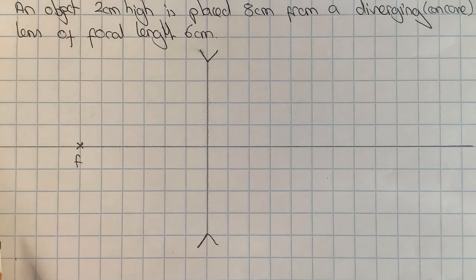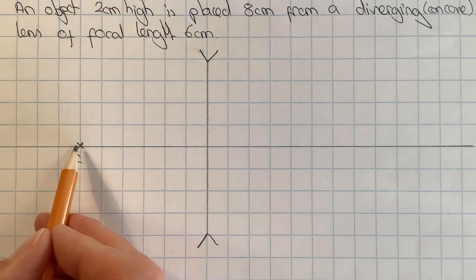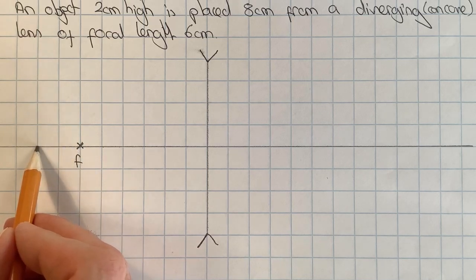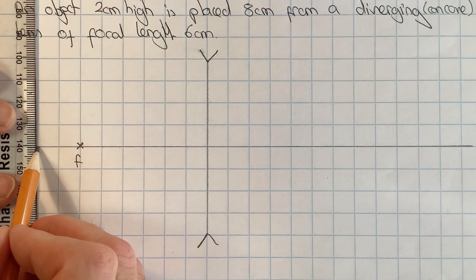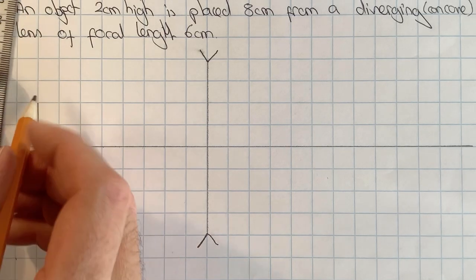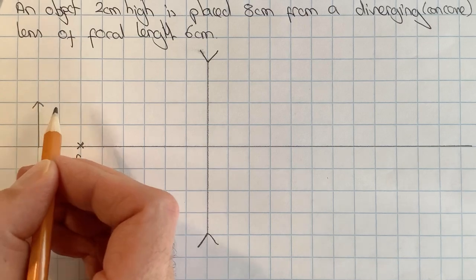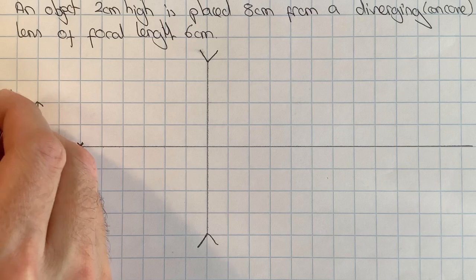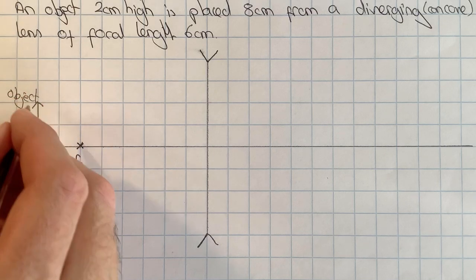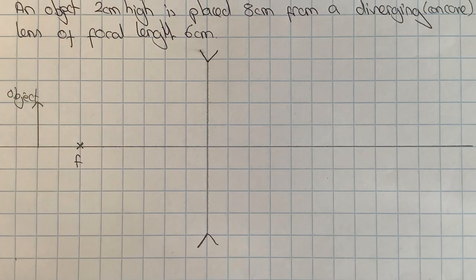Next I'm going to draw my object which I'm told is eight centimeters away and is two centimeters high. I know that's six centimeters away so I can count two more to make my eight centimeters away, and then I can draw in my object as a vertical arrow. I'm going to label that as object and the arrowhead is helpful so I can work out which way up my image is formed.